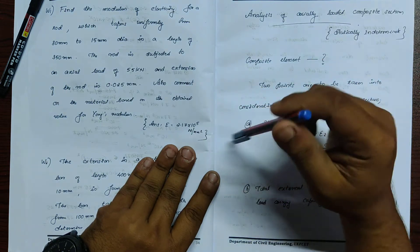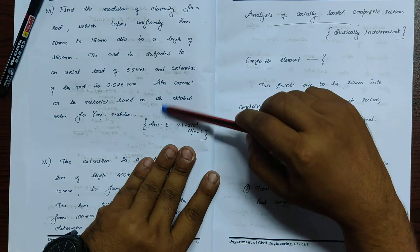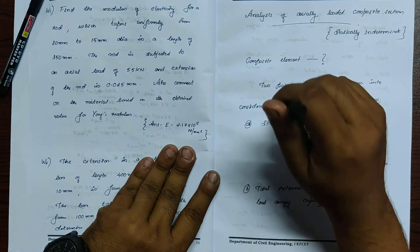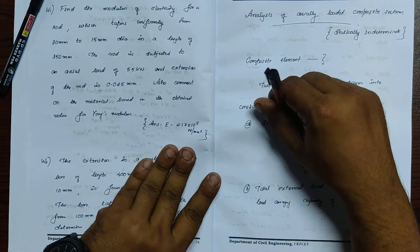So you need to find what material or the type of material, comment on the type of material based on the value obtained for Young's modulus.